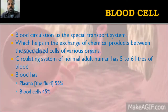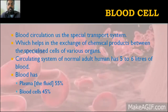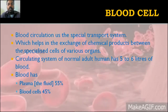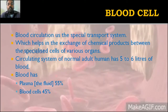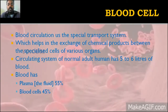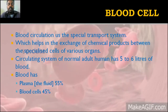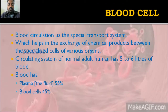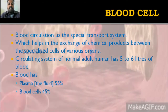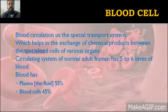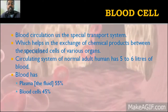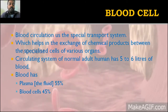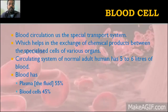Blood has two major components: one is blood cells and the other is plasma. Plasma is a fluid — a liquid. Plasma makes up 55% and blood cells make up 45%. The plasma percentage is higher so that blood can flow easily through the veins and arteries.